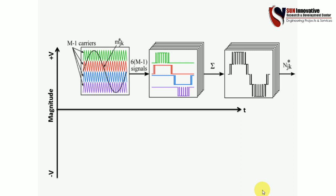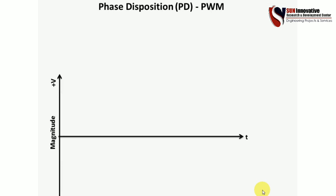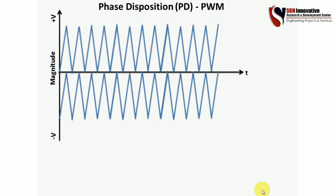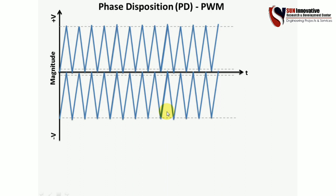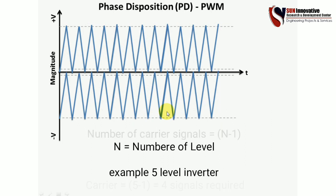Now we start with the phase disposition (PD) technique. In the XY graph, one carrier waveform is placed above the x-axis and the second carrier waveform below it. Above and below the x-axis, the phase is 0 degrees — there is no phase shifting between the two carrier signals. The equation for the number of carriers required is N minus 1, where N is the inverter level. For a 5-level inverter, N minus 1 equals 4, so 4 carrier signals are required.